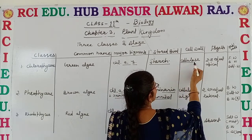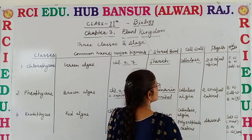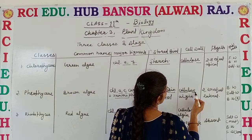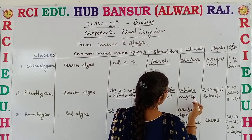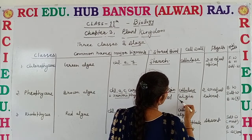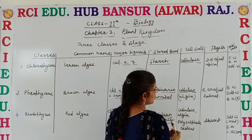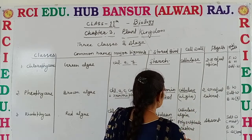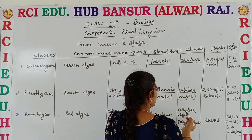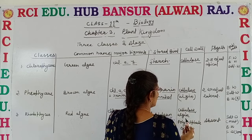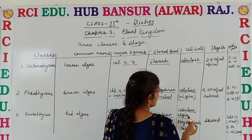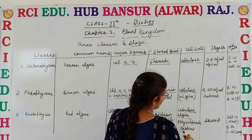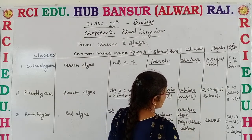The cell wall of Chlorophyceae consists of cellulose. The cell wall of Phaeophyceae consists of cellulose plus a gelatinous covering or coating that is known as algin. And the cell wall of red algae consists of cellulose, algin — a gelatinous covering — plus polysulphate esters.